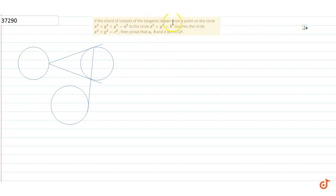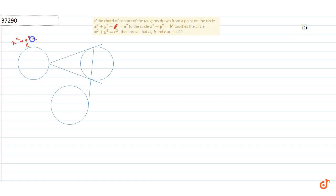The question is: if the chord of contact of the tangents drawn from a point on the circle x²+y²=a² to the circle x²+y²=b² touches the circle x²+y²=c², then prove that a, b, c are in GP. The question ka matlab hai ki ek circle hai x²+y²=a², is par ek point P hai, aur is P point se do tangents draw ki hain circle x²+y²=b² par. Jahan pe tangents us circle ko touch karti hain, un points se chord draw ki, aur ye chord tisre circle ko touch karti hai — that means ye extended chord tisre circle ki tangent hai.